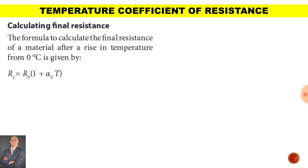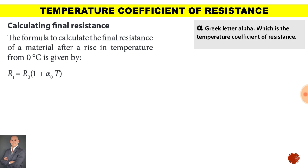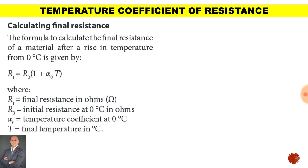To calculate the temperature coefficient of resistance, we use a formula to calculate the final resistance of a material after a rise in temperature from 0 degrees Celsius. The symbol alpha (α) is the temperature coefficient of resistance. RT is the final resistance in ohms, R0 is the initial resistance at 0 degrees Celsius, and T represents the final temperature in degrees Celsius.